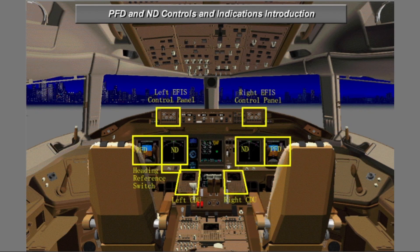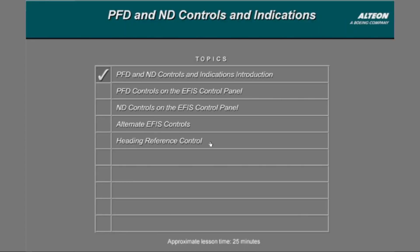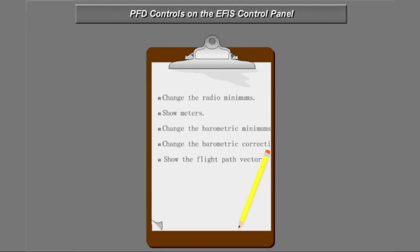You will use the EFIS control panels, CDUs, and the heading reference switch to do part of the system test for the primary display system. Select a display or the EFIS control panel for more information, or select the green arrow to continue the lesson. For the next topic, you will use the EFIS control panel to change the indications on the PFD. You will do these operations to help you do the PDS system test.